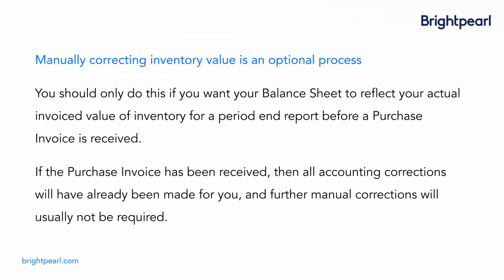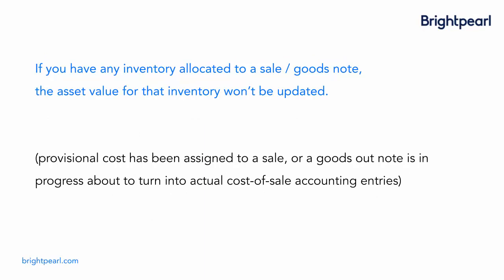Manually correcting inventory value is an optional process. You should only do this if you want your balance sheet to reflect your actual invoiced value of inventory for a period-end report, before a purchase invoice is received. If the purchase invoice has already been received, all the accounting corrections will already have been made for you, and further manual corrections are usually not required. If you are making inventory value corrections, be aware that inventory allocated to a sale or goods out note won't be updated — Brightpearl only updates the value of your on-hand inventory, because a provisional cost has already been assigned to those allocated items and is about to turn into actual cost of sale accounting entries.